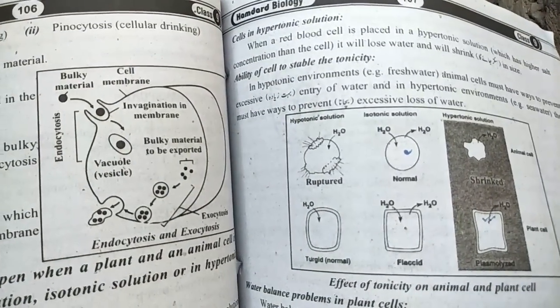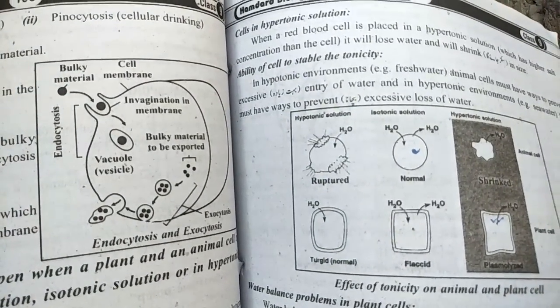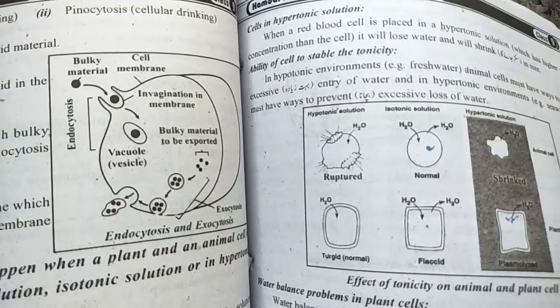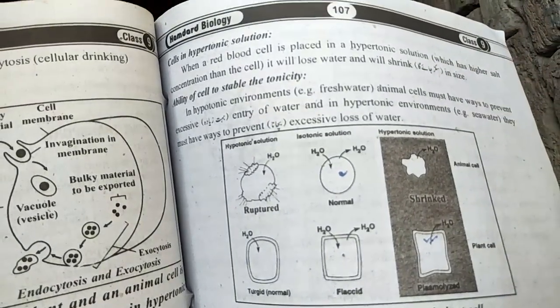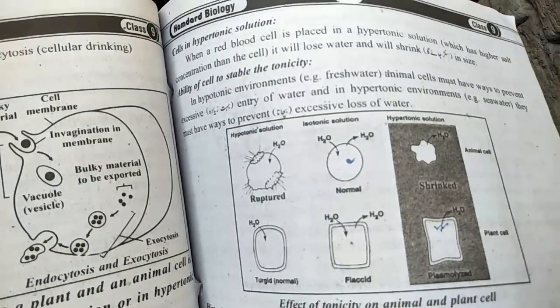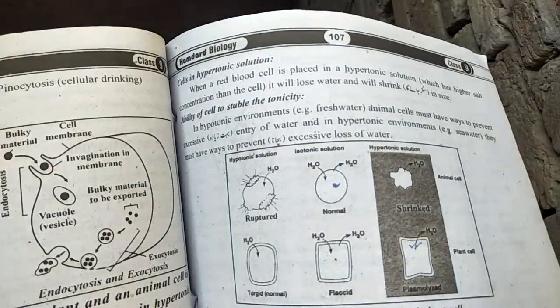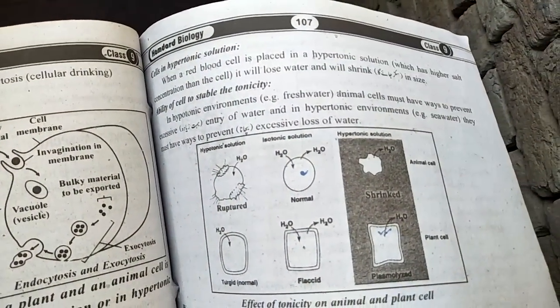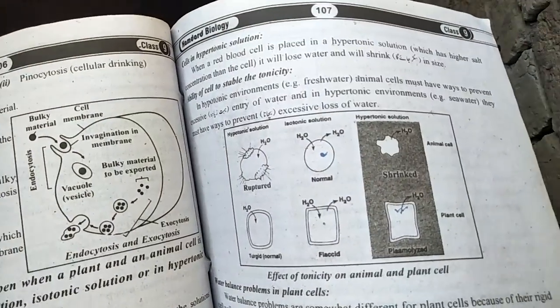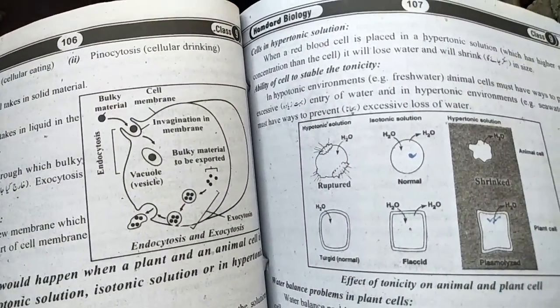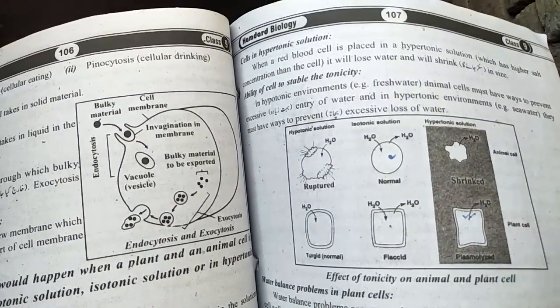Ability of cells to stabilize tonicity: In hypotonic environments, freshwater animal cells must have ways to prevent excessive entry of water. In hypertonic environments like seawater, they must have adaptations to prevent excessive loss of water.